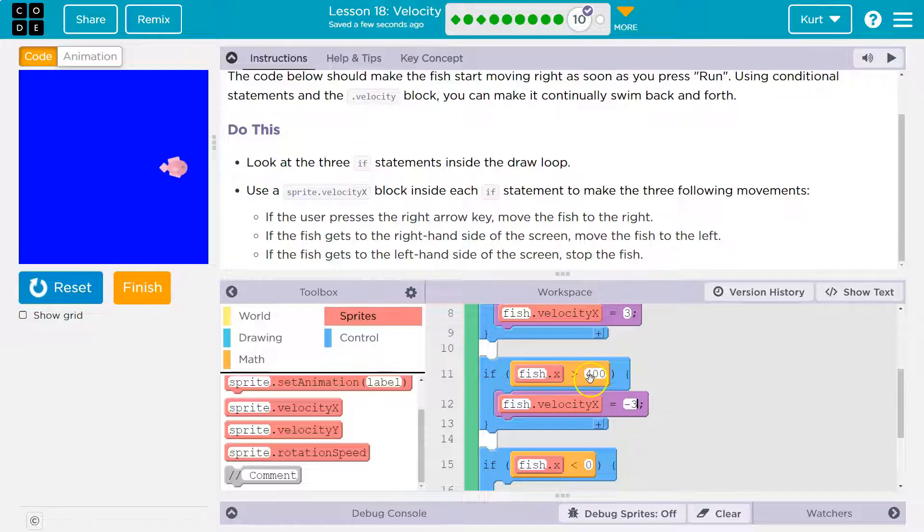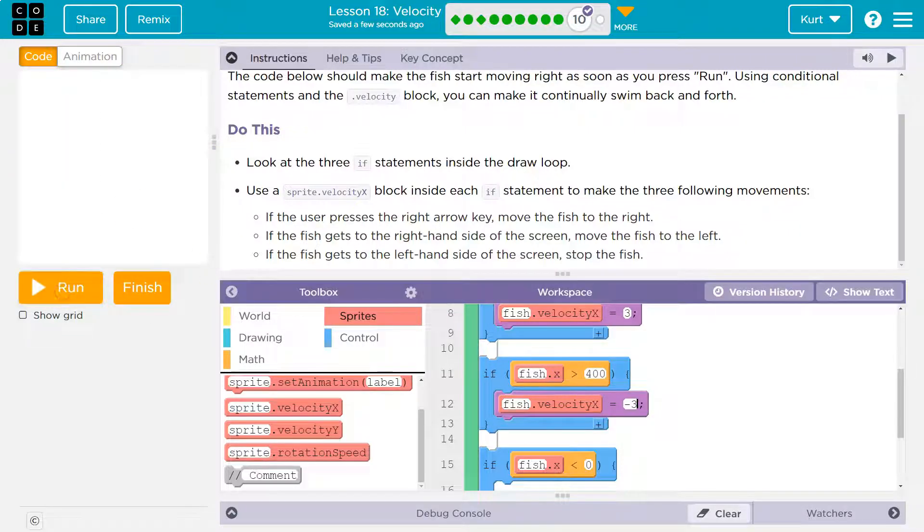So fish.x negative three should make our fish head the other way. Hit right. Boom. Now once this is true, so once the fish's x value is greater than 400, it's about half off the screen, and it goes the other way.